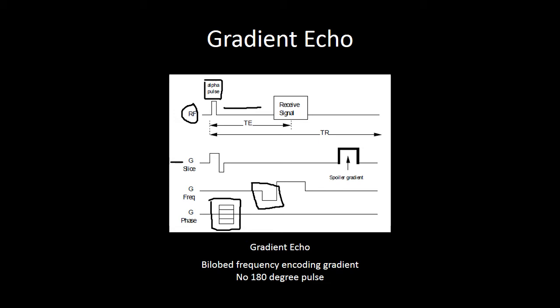On the slice select gradient, you can have a spoiler gradient, and that's why we sometimes refer to this as spoiled gradient echo imaging. That spoiler gradient eliminates all residual transverse magnetization before you send your next alpha pulse.